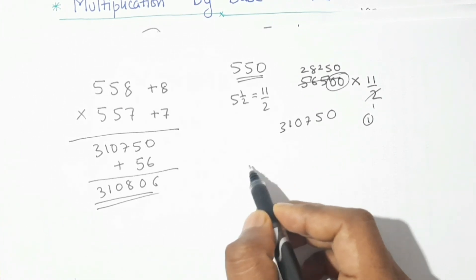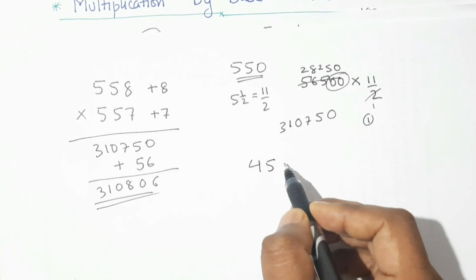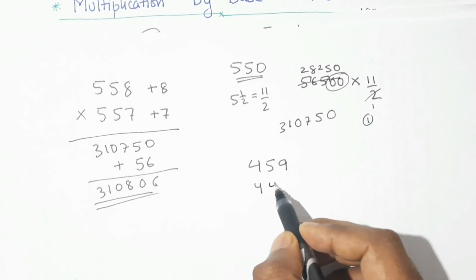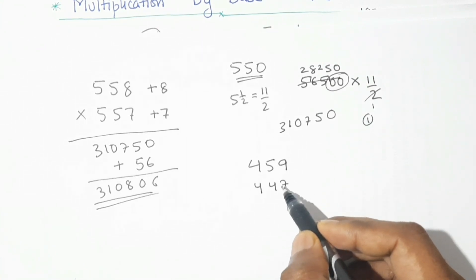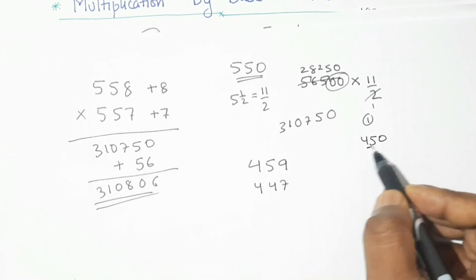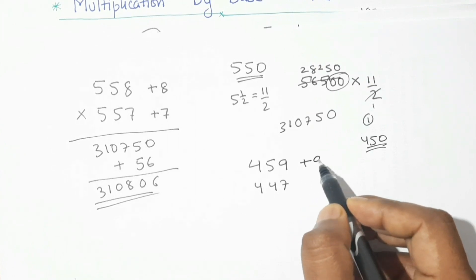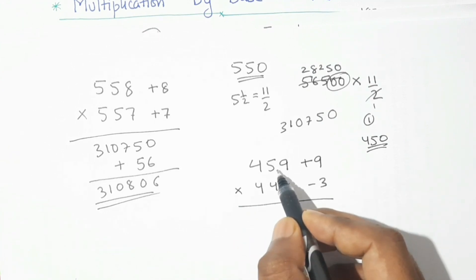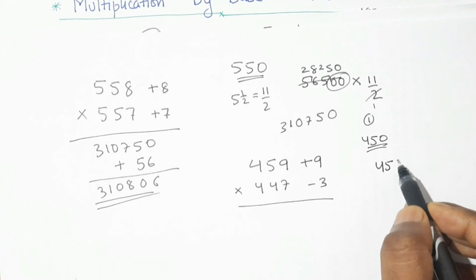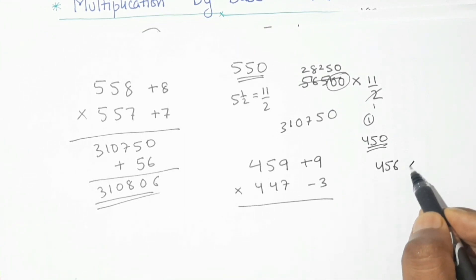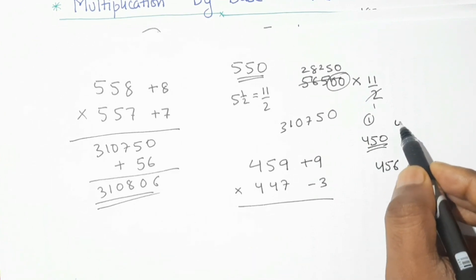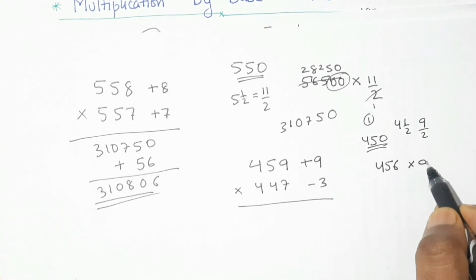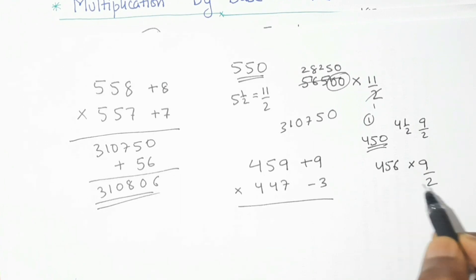This time I will take 459 and 447. Both numbers are closer to 450, so our base is 450. 459 is 9 more than 450 (plus 9) and 447 is 3 less than 450 (minus 3). So 459 minus 3 is 456. Now, 450 is 4 and a half times 100, giving 9/2 as an improper fraction. We multiply 456 by 9/2.